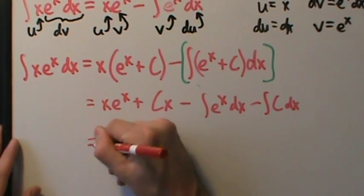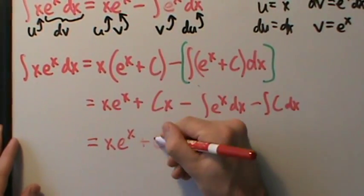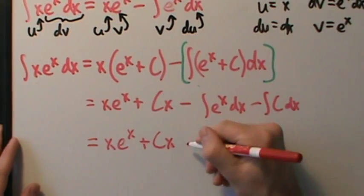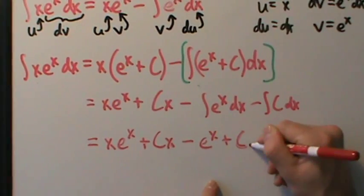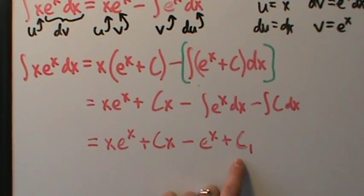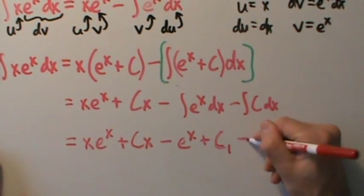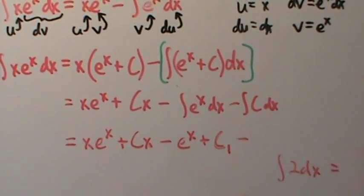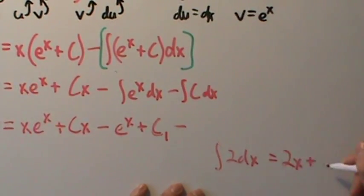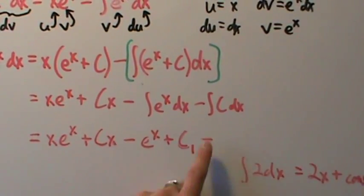So then what happens: x e to the x plus cx, minus — if we integrate e to the x, what do we get? e to the x plus some other arbitrary constant, so we'll call it c1, because we're already using c, so these may be different constants. And what if we integrate an arbitrary constant? Well, what's the integral of, say, 2 dx? If you just integrate 2, then you get 2x plus some arbitrary constant. So the integral of c is c times x plus a constant.